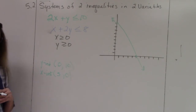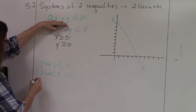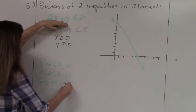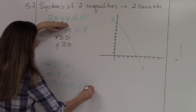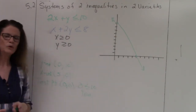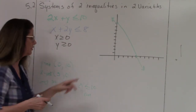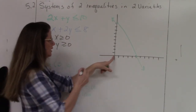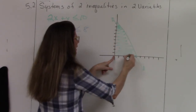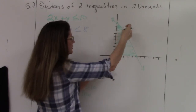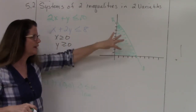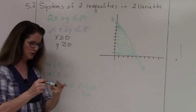Now I'll do my test point, which is (0, 0). Substituting in: 0 is less than or equal to 10 — that's a true statement, which means I'm going to shade where (0, 0) is. I'll shade everything underneath the line, just from the line down to the x and y axes, since I only care about the positive region.